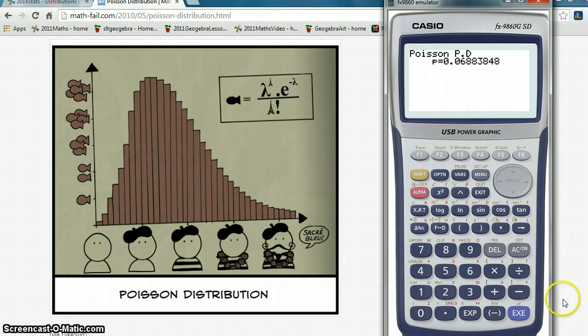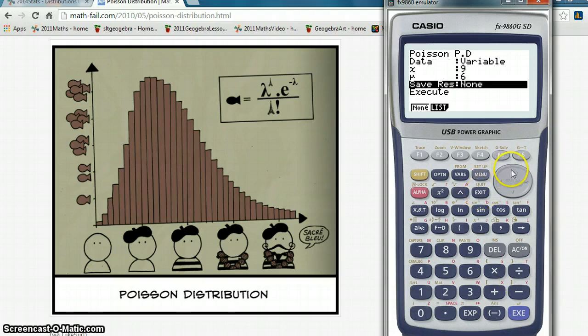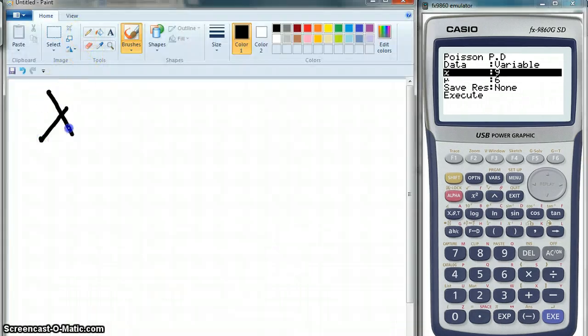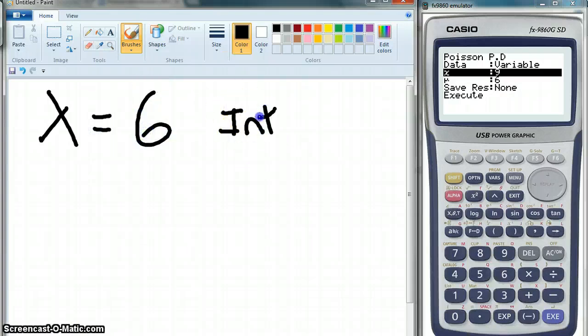Now, the next one we're going to do is the probability of there being more than two shark attacks in one year. What we have to see there is how to change it to less than or equal to. So, we've still got our lambda equaled six, and our interval was one year.